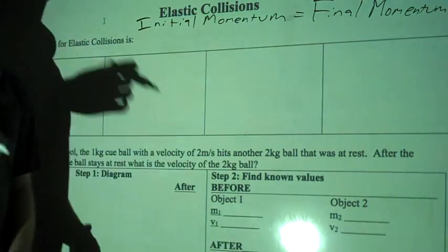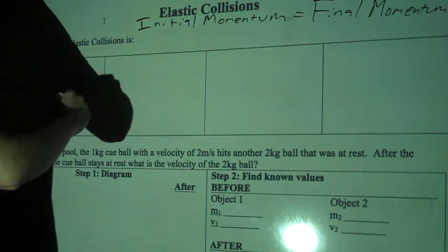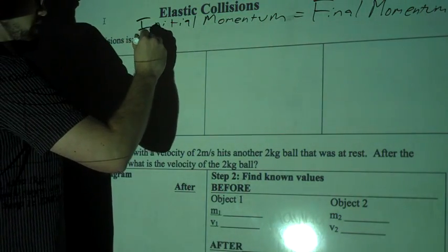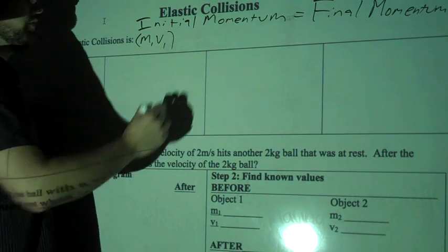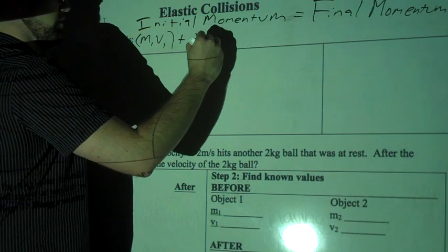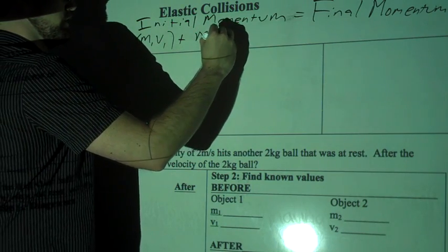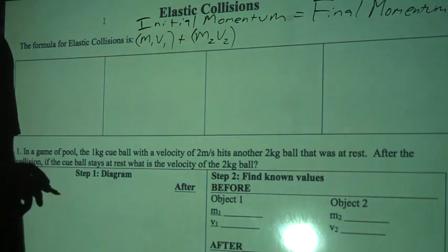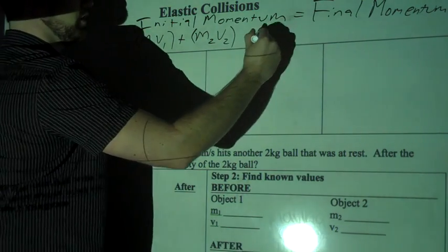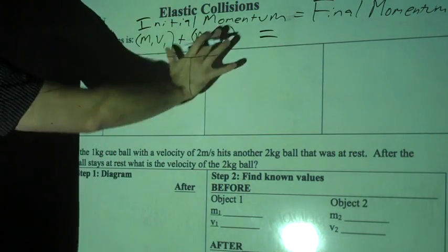And here's what that means. Object one will say M1V1, so that's the first momentum of the first object, plus M2V2, that's the second object, equals - so this is all the initial momentum.